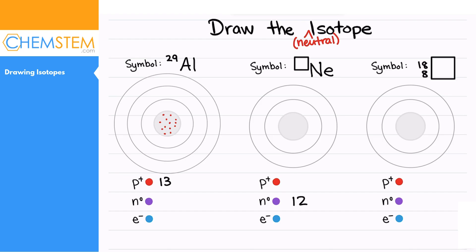What else is in the nucleus? Neutrons. Now this 29 here is the mass number. Remember that is the number of protons plus neutrons. So to find the number of neutrons you gotta subtract the number of protons. 29 minus 13 is going to give us 16.